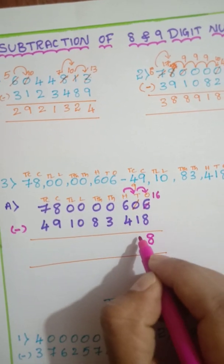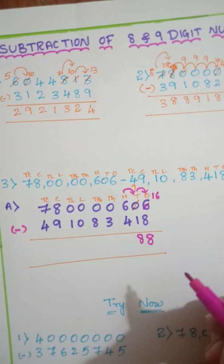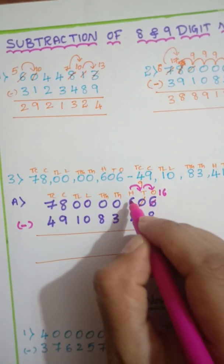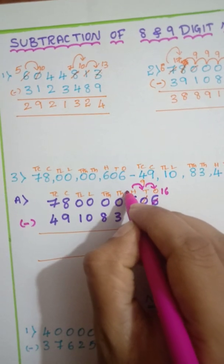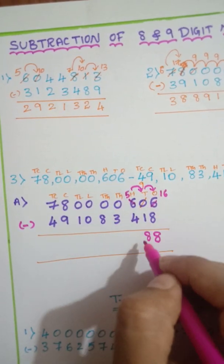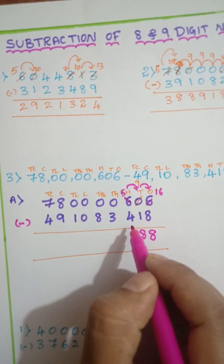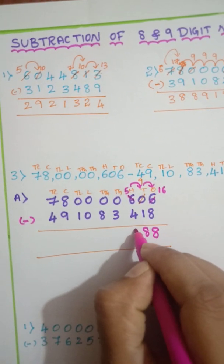Nine minus one. Eight. Already you have taken borrow. I have told you already. Like when you take borrow it's better. You just write it then and there. Then it will be easy. So now five minus four is how much? One.